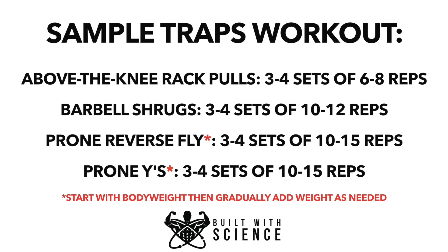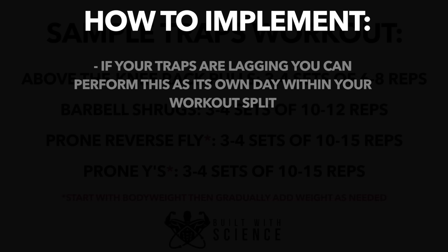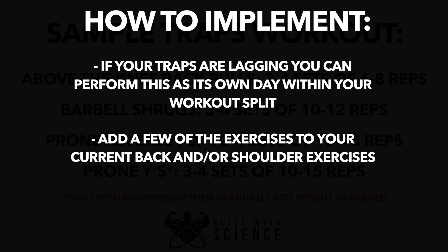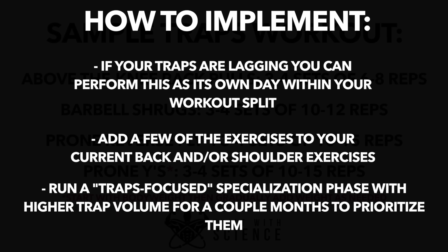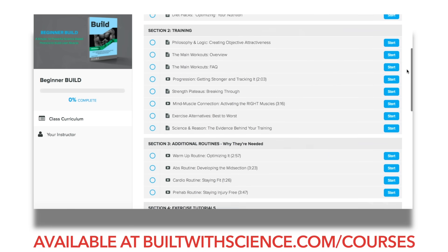To wrap this all up, here is a sample workout you can do using the exercises previously discussed. Keep in mind that the optimal number of sets and reps will vary individually, but this gives you a sense of direction. If your traps are really lagging, you can run this as a standalone workout. Alternatively, add a few of these exercises when you train back or shoulders, or run a specialization phase for a few months to hit the traps with greater volume. Just keep in mind that many back exercises — especially the deadlift — already target the traps, so don't overdo it. You don't just want well-developed traps; you want your entire back and overall physique to be just as developed.